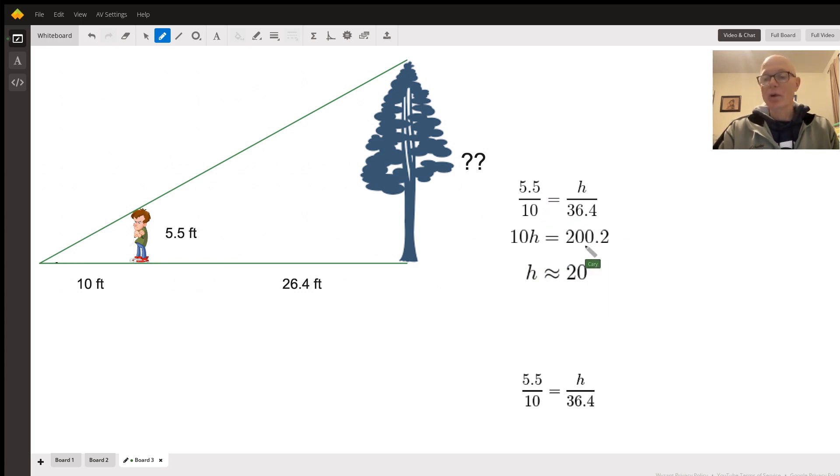That equation can be solved because this is 10 times H. To reverse 10 times H, we'll divide both sides of the equation by 10. So 10 divided by 10 is 1, giving us 1H.